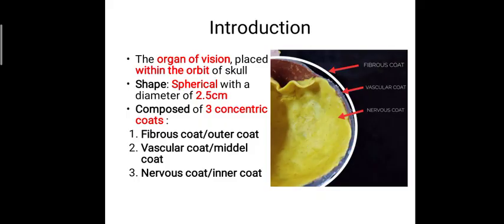The eyeball is the organ of vision which is placed within the orbit of the skull. The orbit is a socket present on the skull in which the eye is situated. The eyeball is spherical in shape with a 2.5 cm diameter and is composed of three concentric layers lying one after the other.